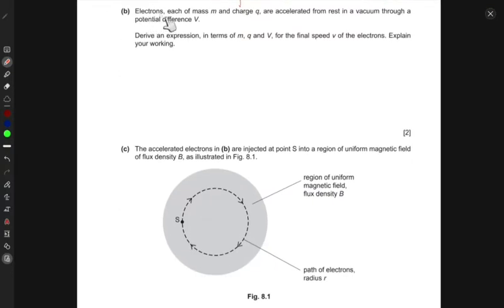Next, we have electrons, each of mass m and charge q, are accelerated from rest in a vacuum through a potential difference V. Derive an expression in terms of m, q, and V for the final speed of the electrons. Explain your working.